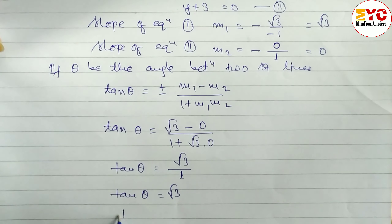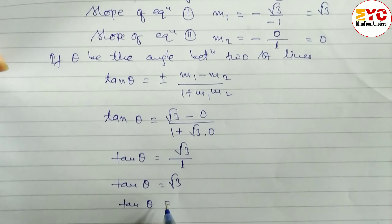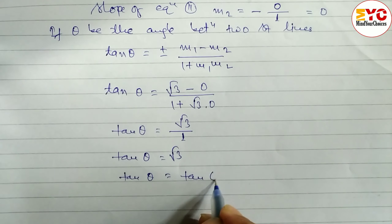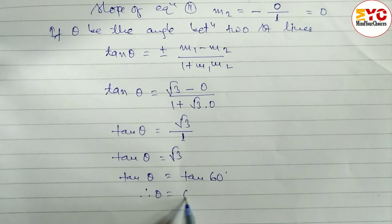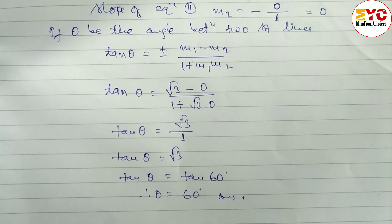So tan theta is equal to root 3. How much is tan 60? Tan 60 is equal to root 3. Therefore theta is equal to 60 degrees, so the acute angle between the two straight lines is 60 degrees.